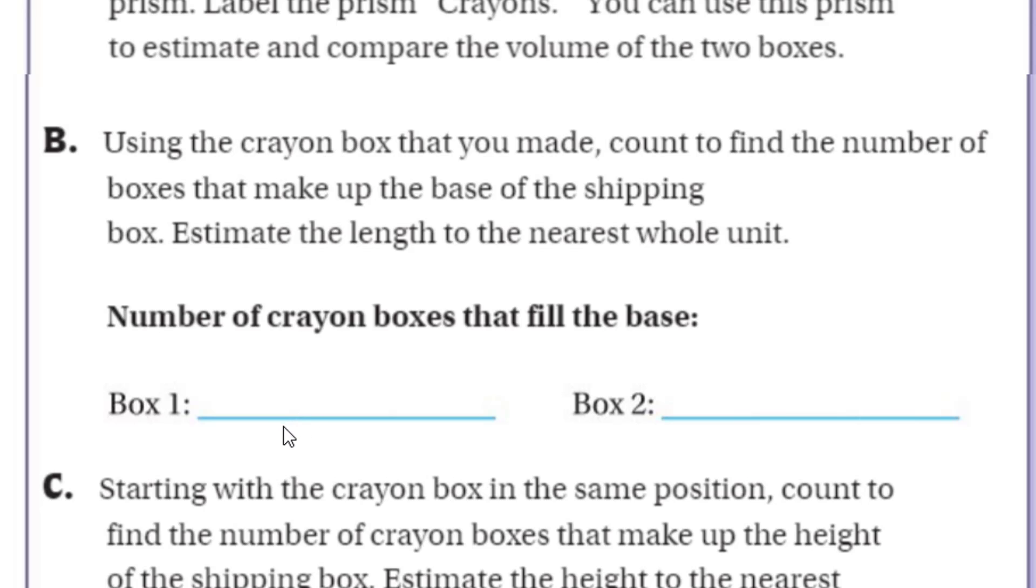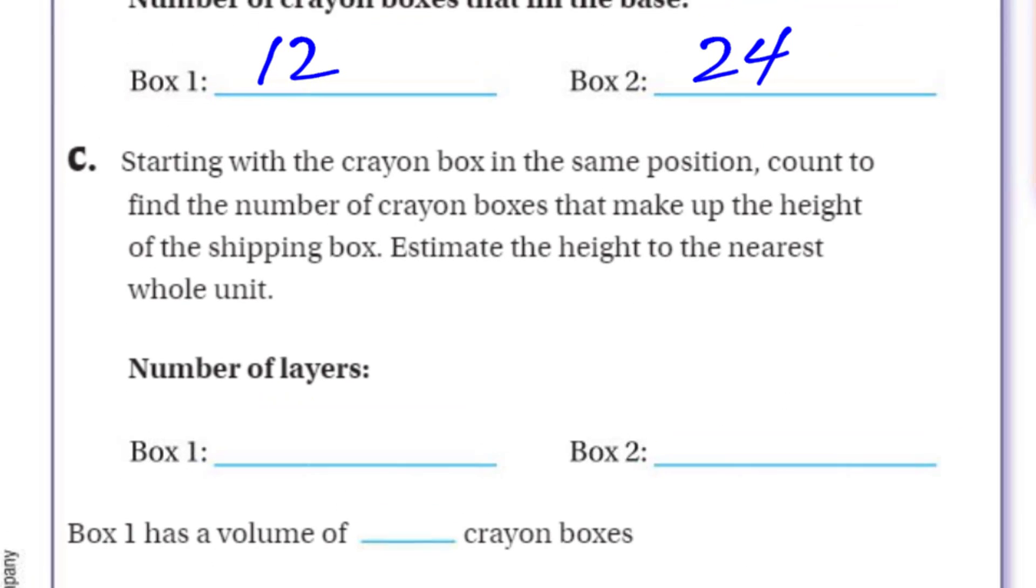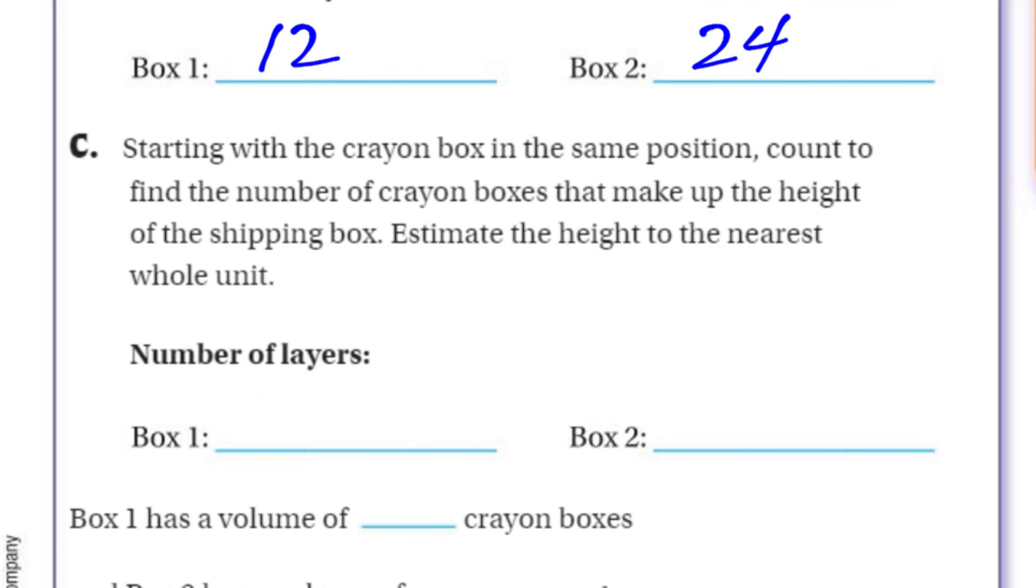And she's going to estimate how many of those are going to fit in that larger box that she has on her table. Number of crayon boxes that fill the base. You know, I'm just going to use an estimated number because I don't have a shipping box. I'm going to say, so let's, let me just go with two boxes. 12. And then box two, let me say it's a lot larger. We're going to say 24.